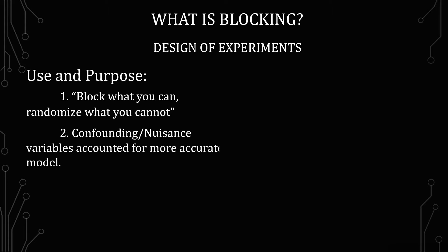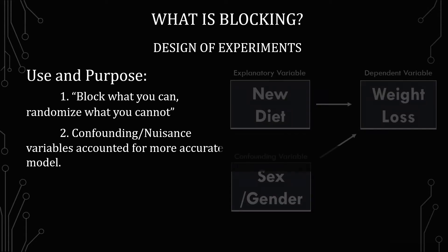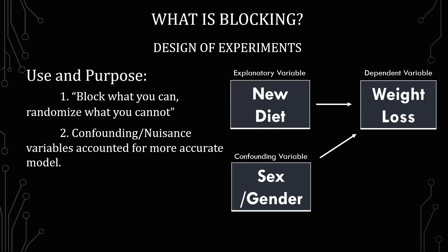For example, say we want to use an explanatory variable of a new diet and we want to see whether or not that new diet results in weight loss. A confounding or nuisance variable may be sex and gender. In fact, we know it is, because this type of study has been done several times — depending on your sex, the influence of the new diet will vary.